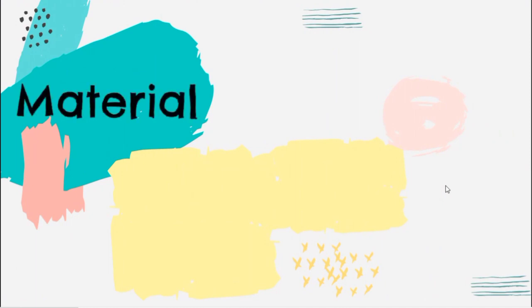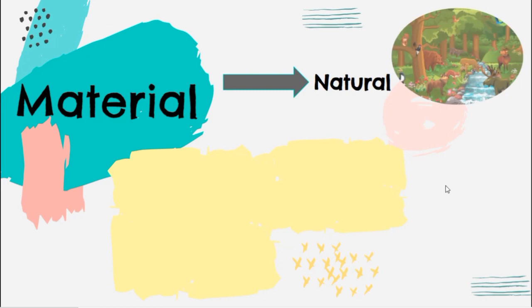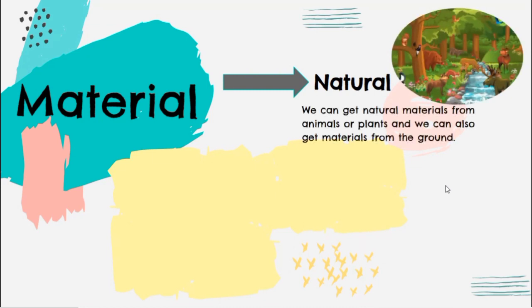Materials can be natural and also can be made. We can get natural materials from animals or plants, and we can also get materials from the ground.